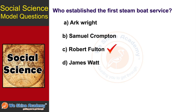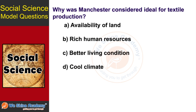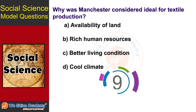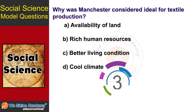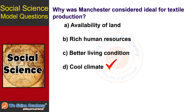The next question is: Why was Manchester considered ideal for textile production? The answer is Cool Climate.